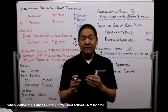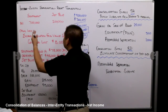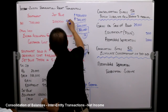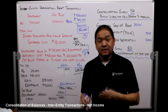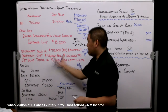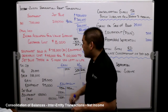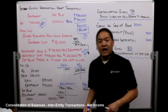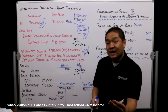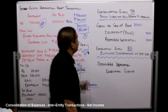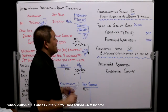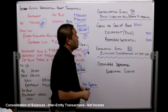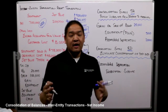Now let's find the combined net income. Southwest and JetBlue combined at $700,000 plus $200,000 gives us $900,000. But we have to make adjustments, because Southwest's $700,000 includes that $25,000 gain — we've got to subtract that. Before we subtract it, let's talk about the consolidation entries we make. The first is consolidation entry TA, whose job is to remove the unrealized gain and restore the historical price of the asset.